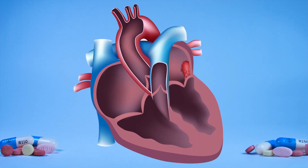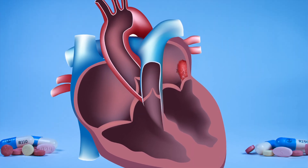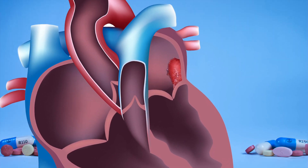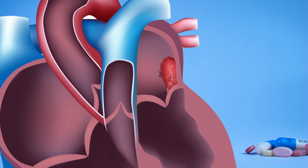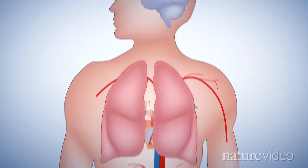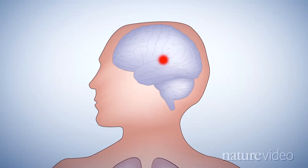With atrial fibrillation or flutter, the top chamber of the heart, called the atrium, has an irregular movement that allows blood to pool and potentially form a clot. There is a risk that this clot may become dislodged from the atrium and travel around the body, increasing your risk for stroke.